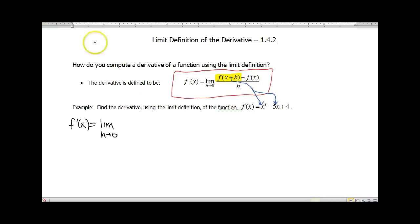So when we do that, that's going to look like (x+h)³ - 5(x+h) + 4.